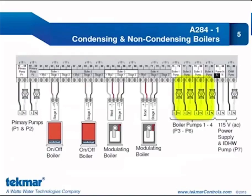Then we have our boiler pumps, with the same color distinction between pump terminals. In the 275, if you used an on-off boiler there was no way to also control that boiler pump. But now we have dedicated boiler terminals and dedicated boiler pump terminals, so it doesn't matter what type of boiler you're using — you can control it and its pump. On the right-hand side we have our 115V line voltage power in, and the terminals for the indirect domestic hot water pump. All of these pump terminals are dry contacts — we can switch up to 230V, 5A, one-third horsepower through these terminals.